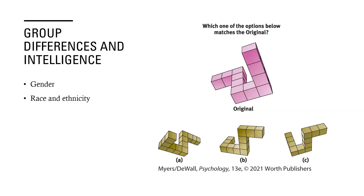There are a few minor differences in intelligence when we compare men and women. Women tend to be a bit better at spelling, verbal fluency, reading, and locating objects. Despite popular belief, there's hardly a difference in math performance between men and women. However, men do tend to outperform women on complex math problems.